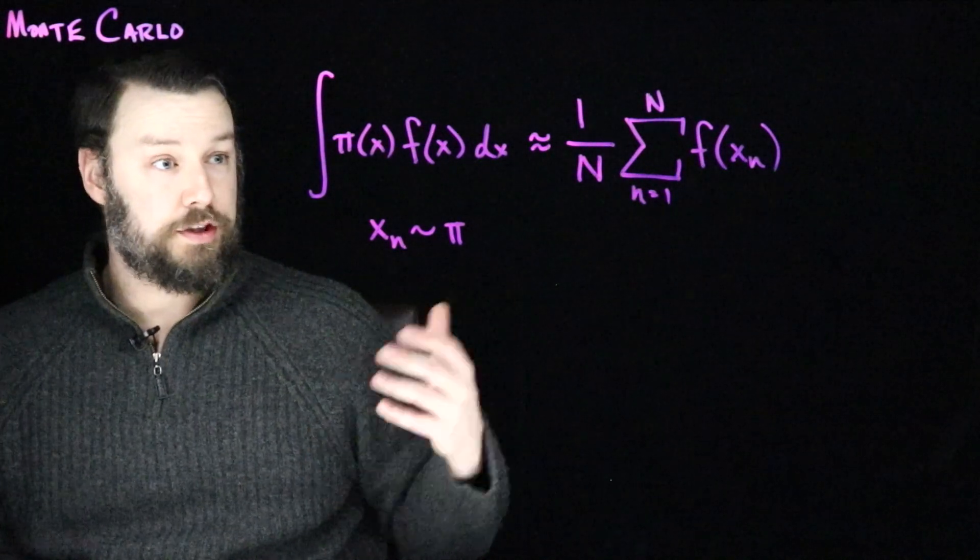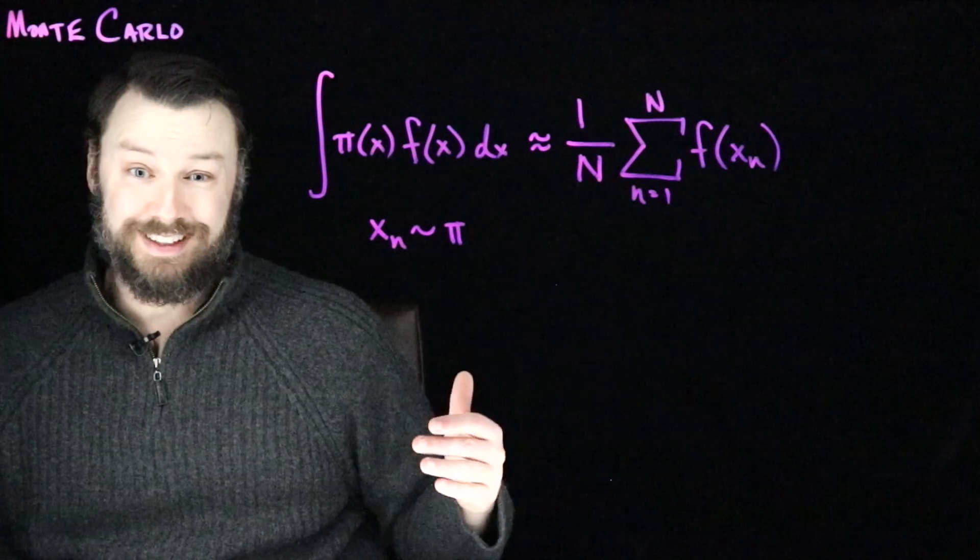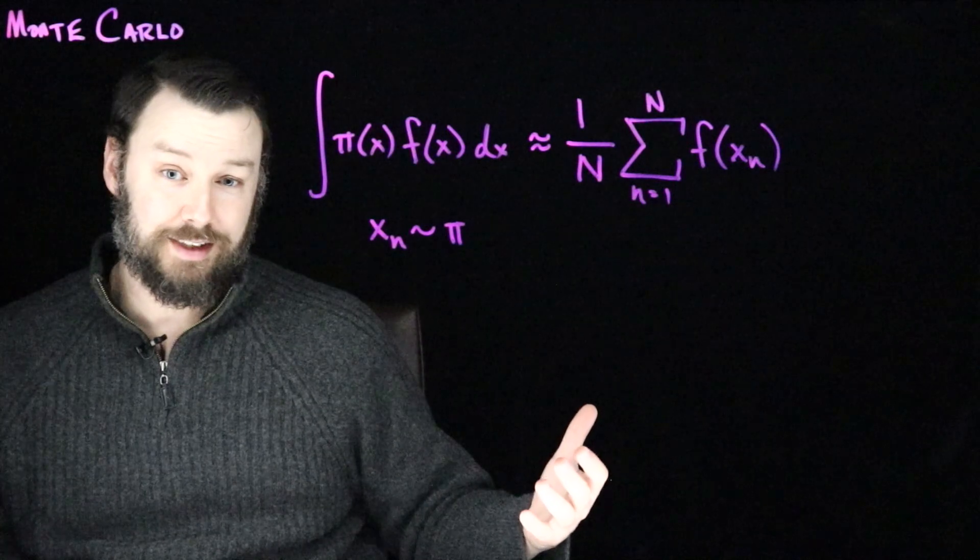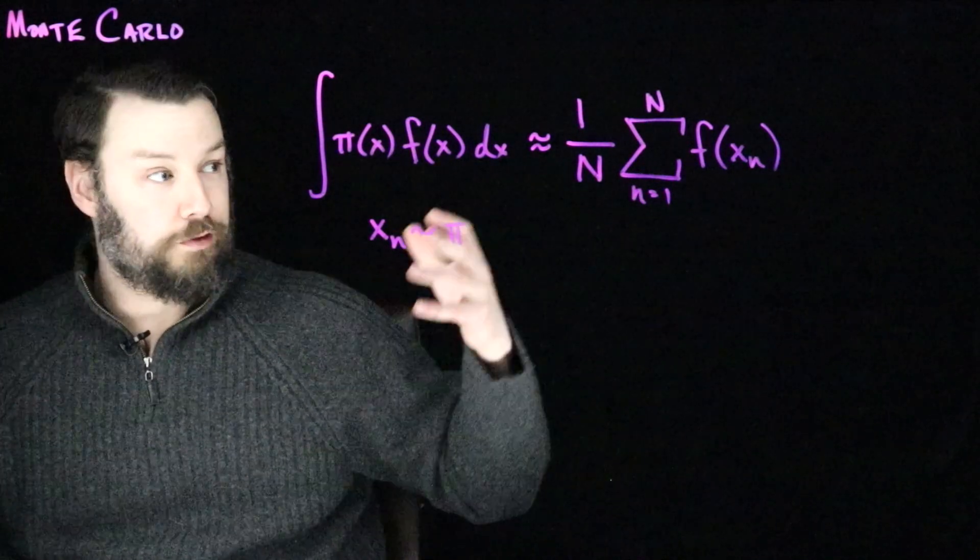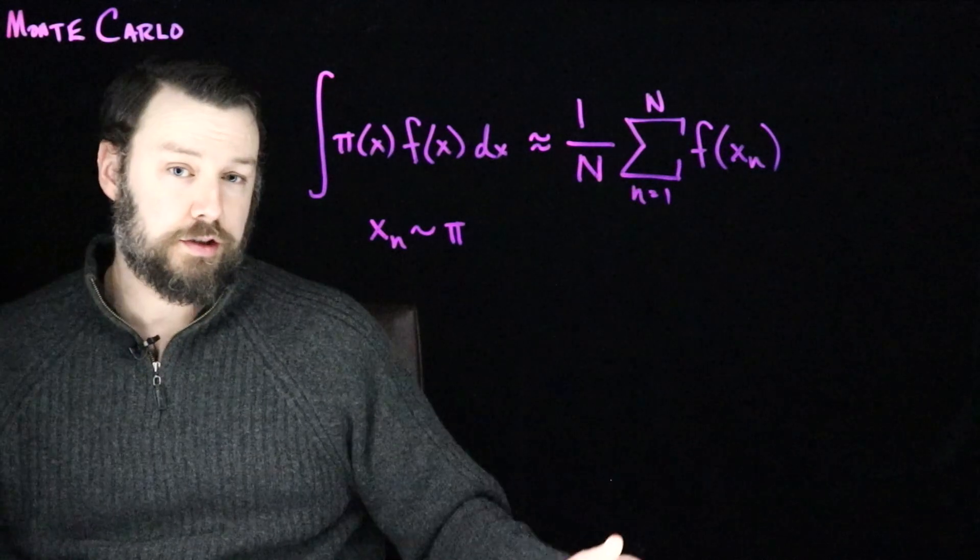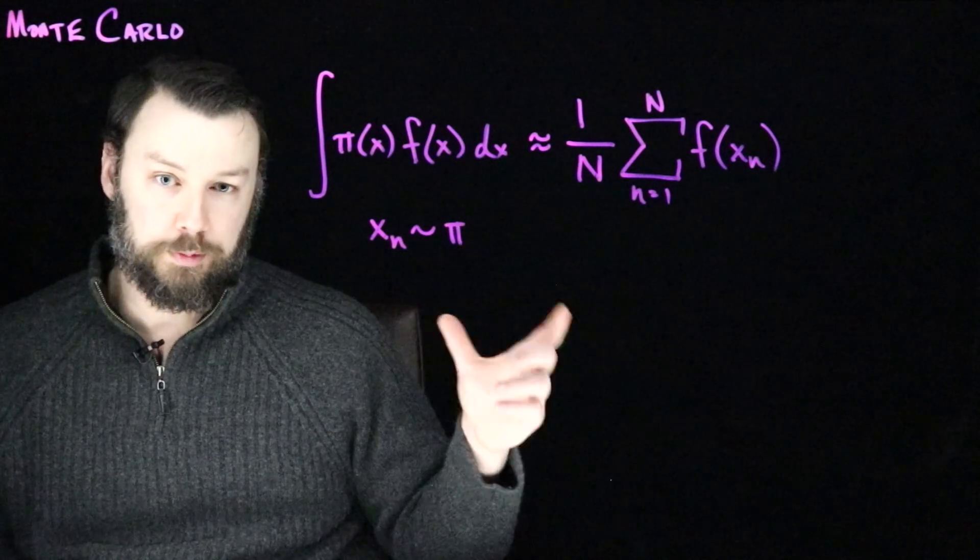Or maybe pi of x is representing in your self-driving car the possible situations that might arise at the next intersection. And you'd like to make a good decision that takes into account all the possible states that that intersection might be in. Well, you might want to find the expected risk associated with some decision going into that intersection. And that will be again an expectation.